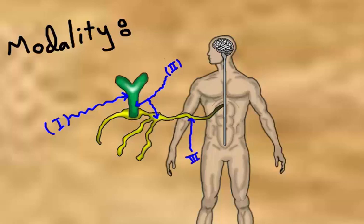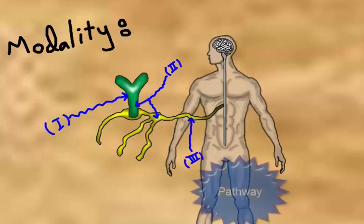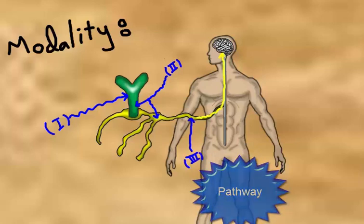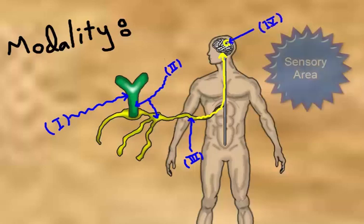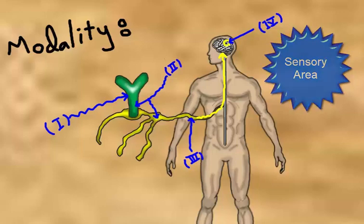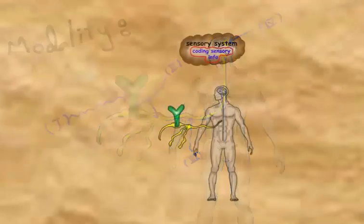Third, there is a specific pathway or tract for every sensory modality — for example, a touch pathway or a pain pathway. Fourth and last, there is a specific area in the sensory cortex for every type of sensation at any part of the body.